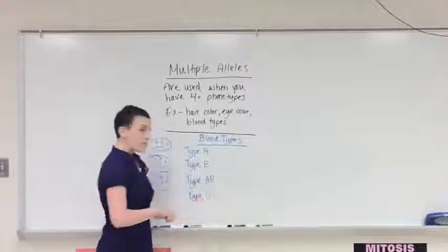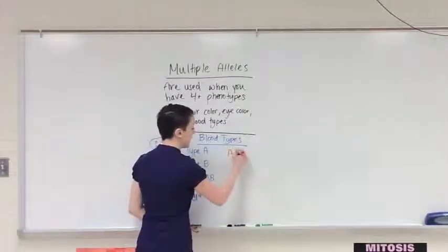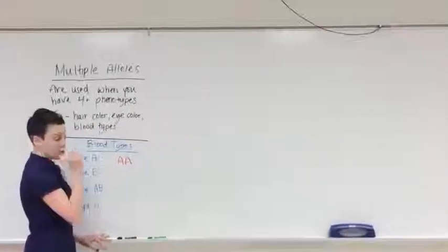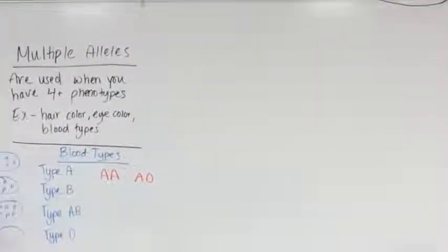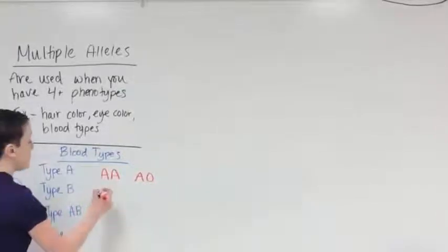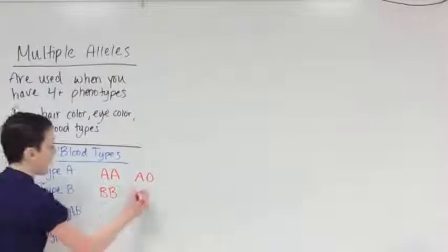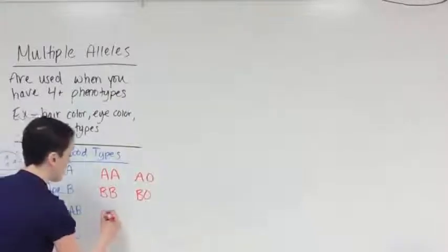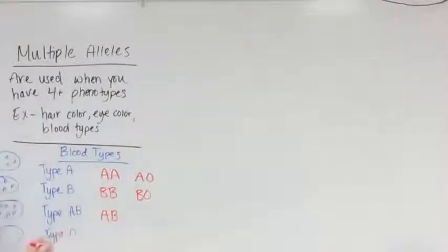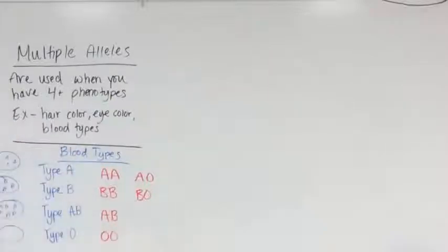For genotypes: if you have type A blood, you can be homozygous — AA genotype — or heterozygous — AO. For type B blood, you could be homozygous BB or heterozygous BO. If you have AB blood, you can only be AB. And if you have type O blood, you're OO. It's pretty easy.